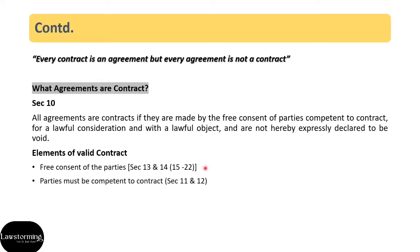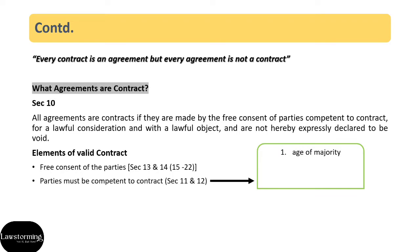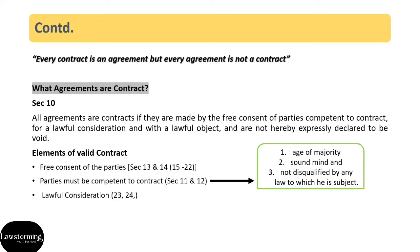Secondly, parties must be competent to contract, and Sections 11 and 12 deal with competency of parties. Section 11 says, first of all, the party should be major, of sound mind, and not disqualified by any law to which he is subject. Section 12 defines what sound mind basically means. After this, the third condition is lawful consideration. Fourth is lawful object. Both these conditions are defined under Sections 23 and 24 of the Indian Contract Act.